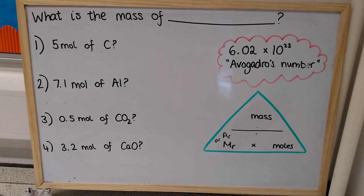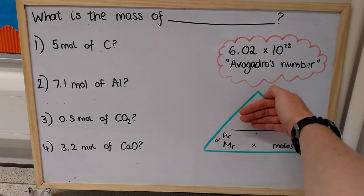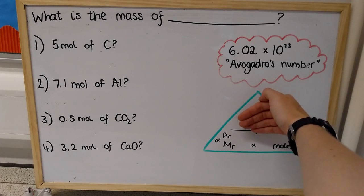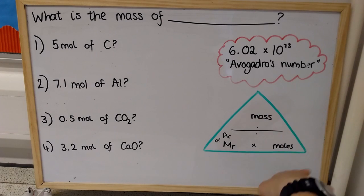If you're going to use it, if we're working out a mass, we want to cover up mass and see what's left. So we're going to take either the relative atomic mass or the relative formula mass, depending on whether we're using an element or a compound, and we're going to times it by the number of moles that we're interested in.